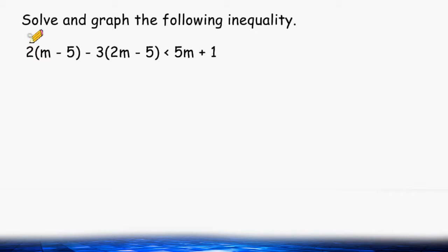Right here we can multiply 2 times m and 2 times 5 which would give us 2m minus 10. And right here we have 3 times 2m which is 6m, but we have a minus sign here so we have to write minus 6m, and then we have 3 times 5.